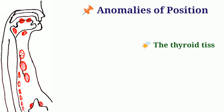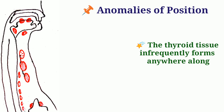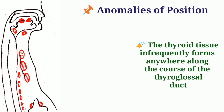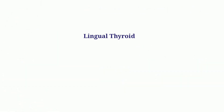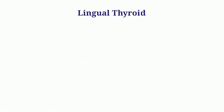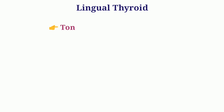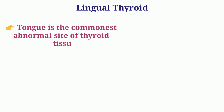Let's start with anomalies of position. Thyroid tissue infrequently forms anywhere along the course of the thyroglossal duct. Normally it stops at its destination, but whenever it stops at a previous or next station, there is a problem. It can be before the destination — lingual or sublingual — or after the destination, that is intrathoracic. Tongue is the commonest abnormal site of thyroid tissue formation, where it is termed lingual thyroid.